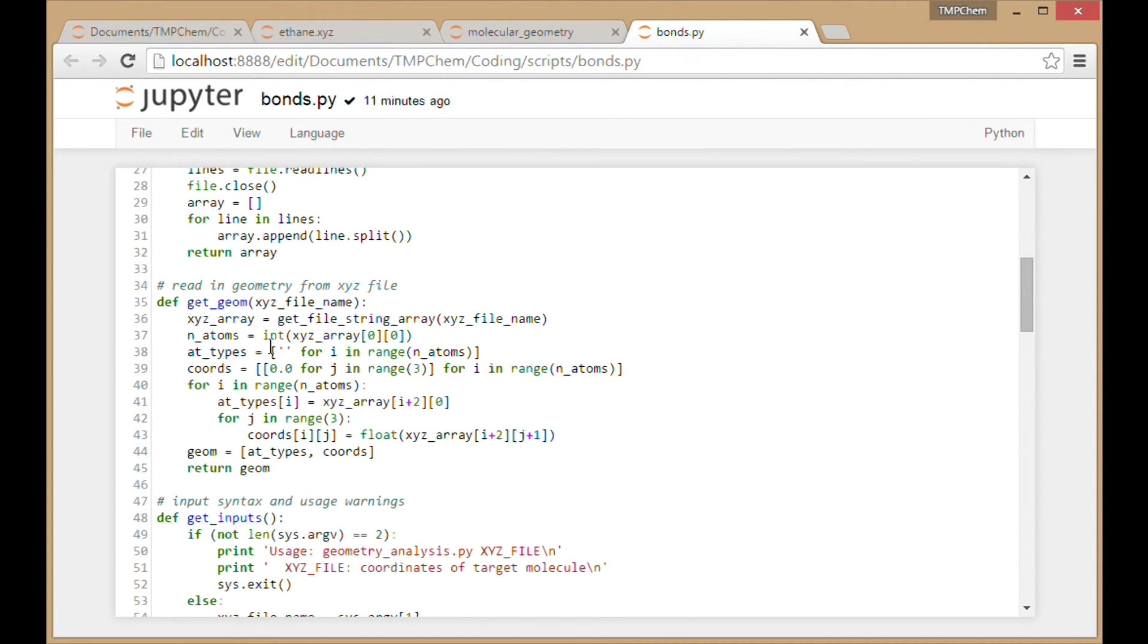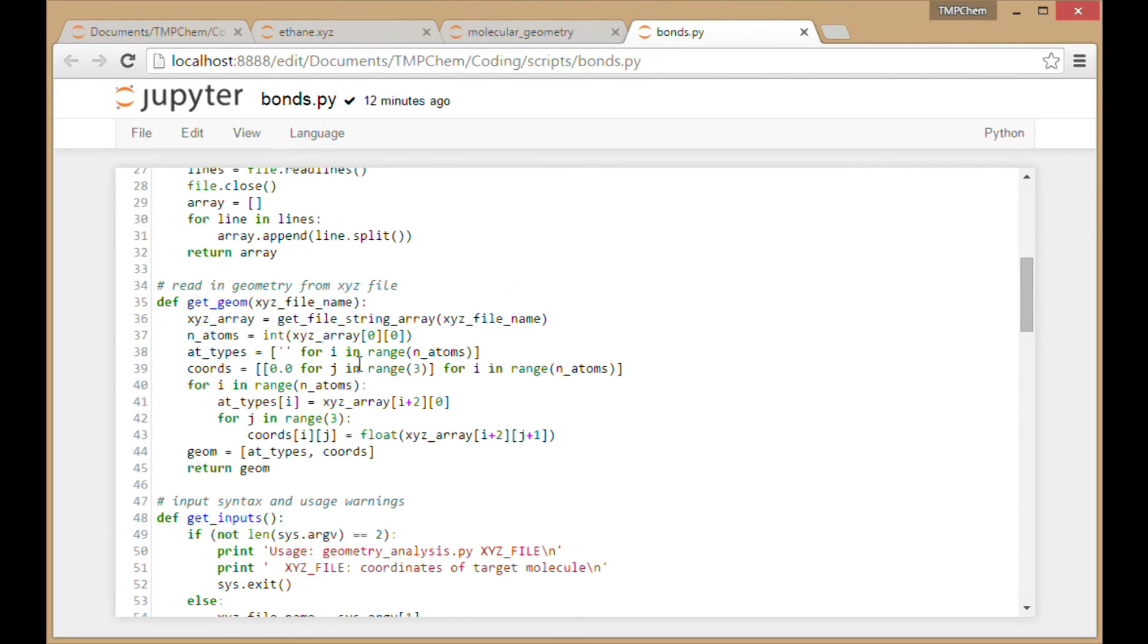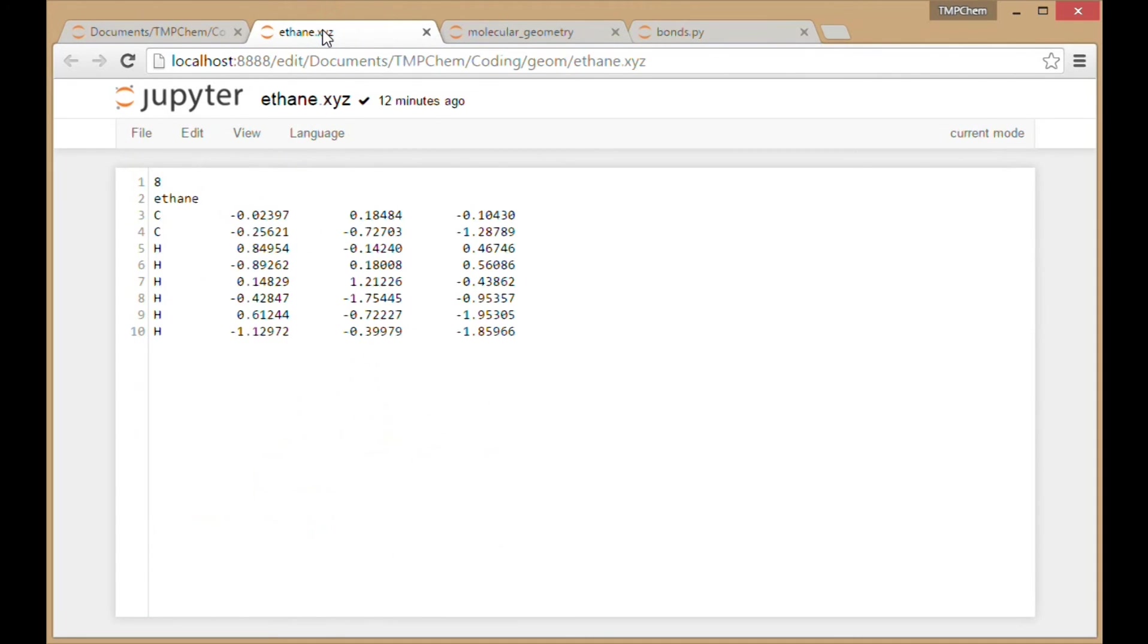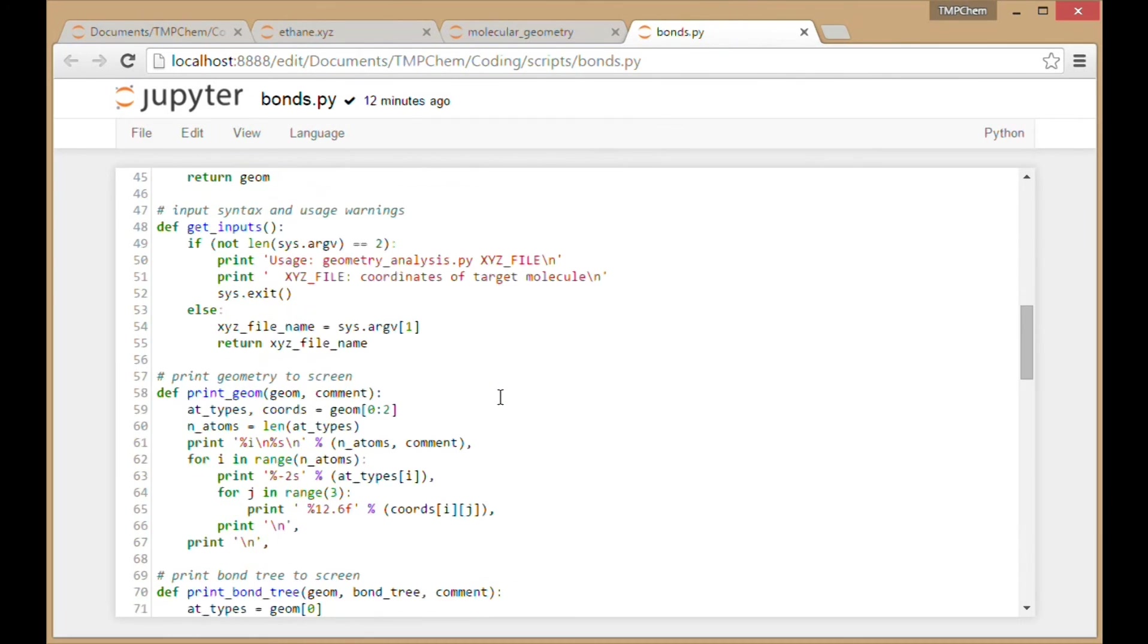Using that array, I'm going to be able to read in the geometry into a structure that's convenient for me. That's going to be an array that has both the atom types, which are going to be C or H, and also an array of coordinates, which is going to be a 3n by 3 array of all the XYZ coordinates.